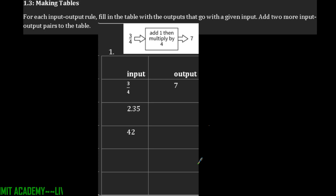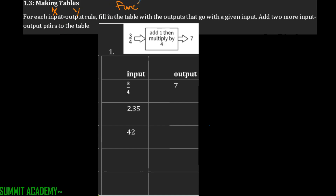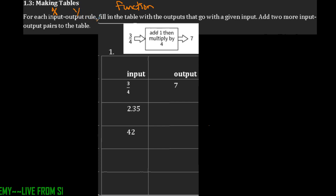Next, we're talking about making a table. For each input-output rule, fill in the table with the outputs that go with any given input. Add two more input-output pairs to the table at the bottom. Remind yourself what an input-output rule is: when we say an input, we're talking about an x, and when we have an output, we're talking about a y. When we have a function, we change our x inside our function and get our output — the y value — and then plot those ordered pairs on the graph. For right now, we just have to follow the rule that's given.